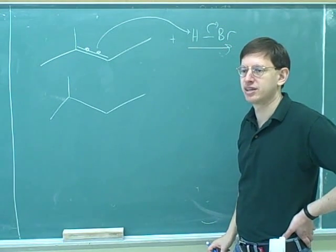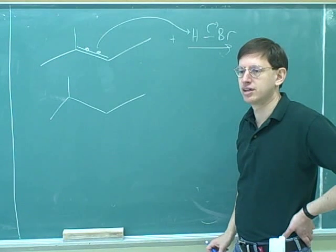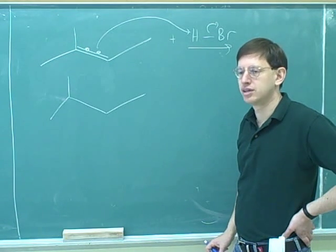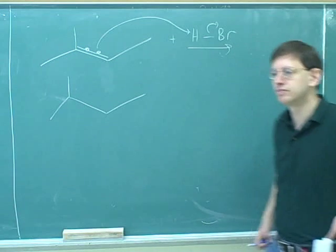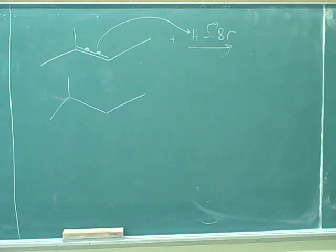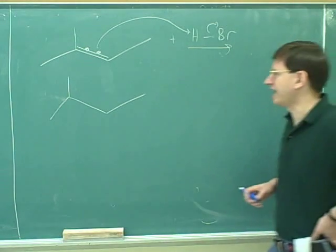Because you need to put the hydrogen on the less substituted carbon so that the carbocation is on the tertiary part, so that when the bromine attacks it's more stable. Well, the carbocation is more stable when it's tertiary. That's right. Yeah, you worked that out. That's good.